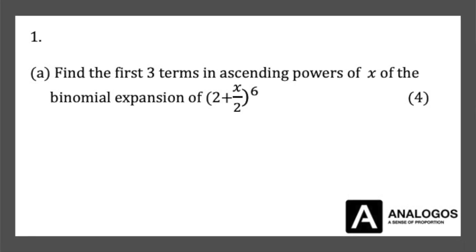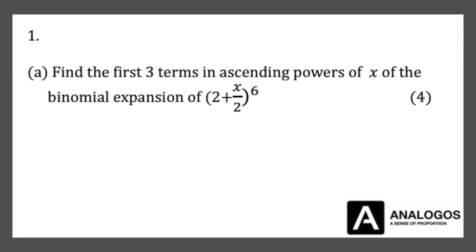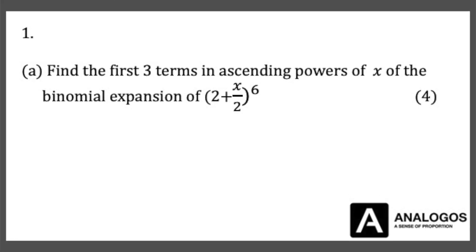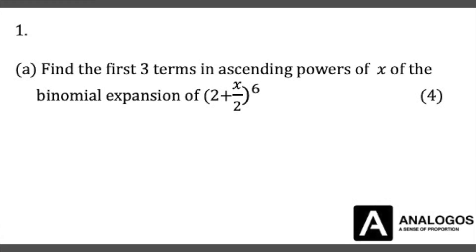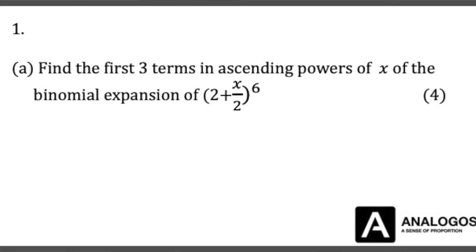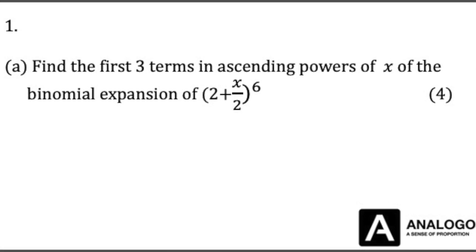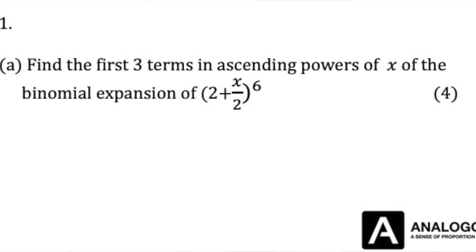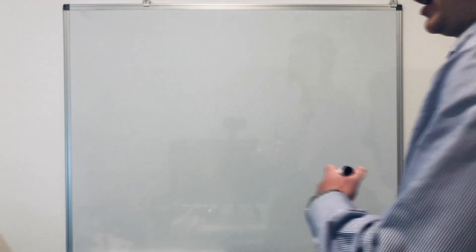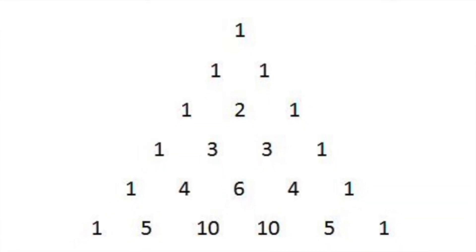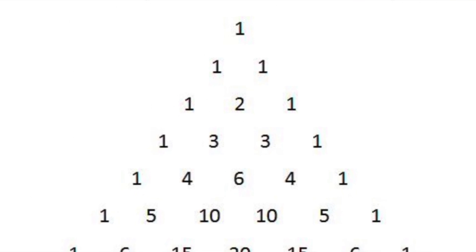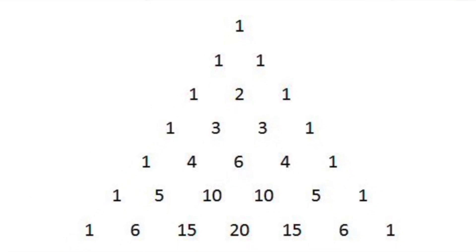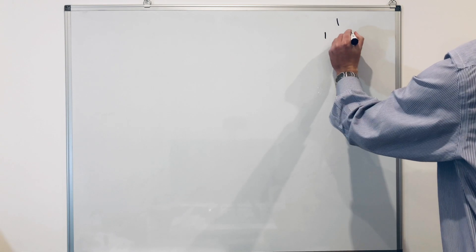So question one, part A. Find the first three terms in ascending powers of x of the binomial expansion of open bracket 2 plus x over 2 close bracket to the power of 6. The first thing I would do for any question that asks for a binomial expansion is do Pascal's triangle. I'll leave it here on the right hand side and do the work on the left.